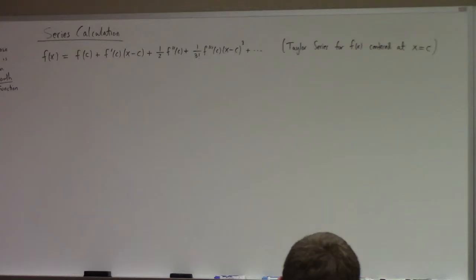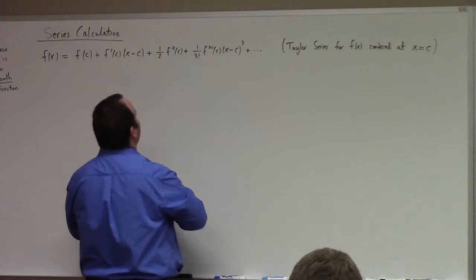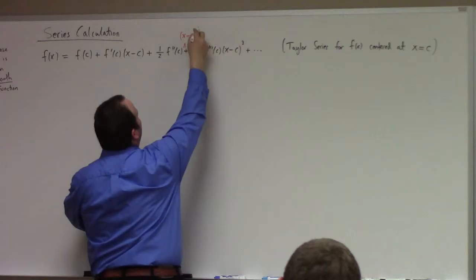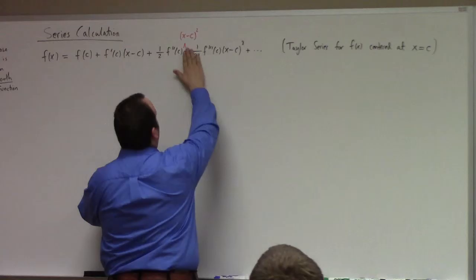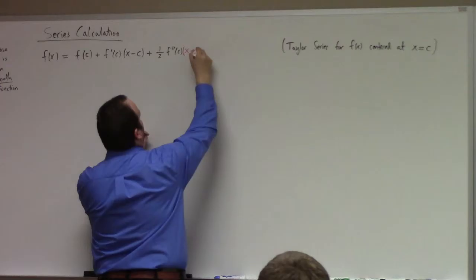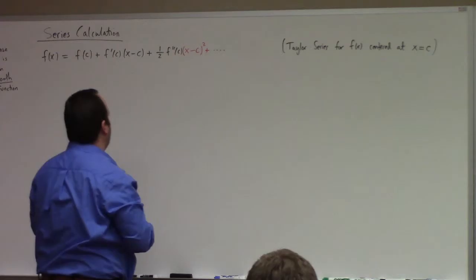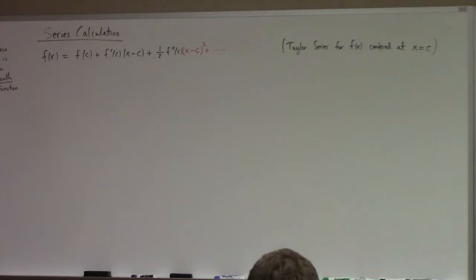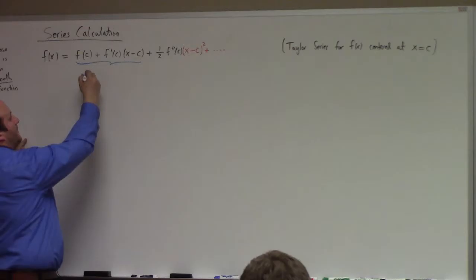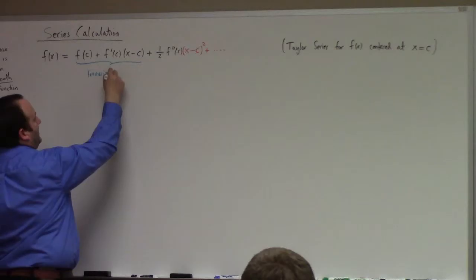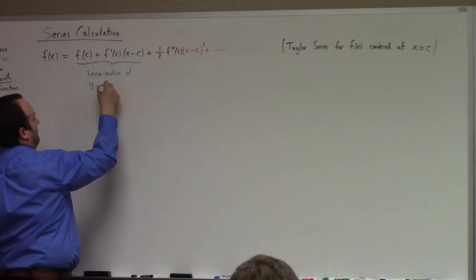A student points out that there should be an x minus c term — and yes, thank you for that. So watch out for my mind skipping this morning. I take that back, there should be f prime of c times x minus c. I'm changing notation a little bit, talking about function f rather than function g.